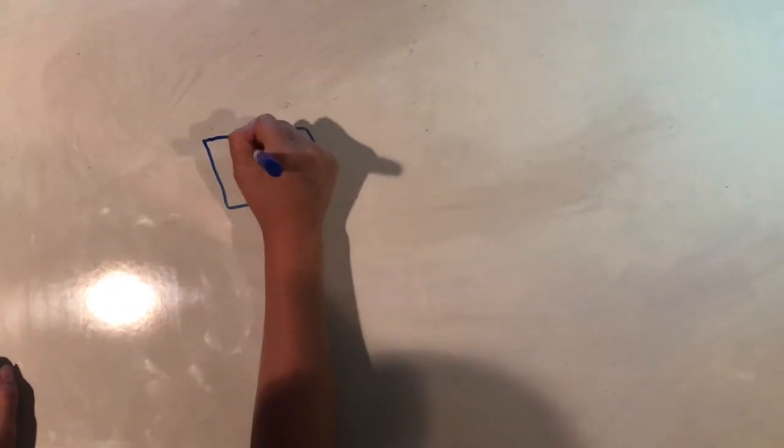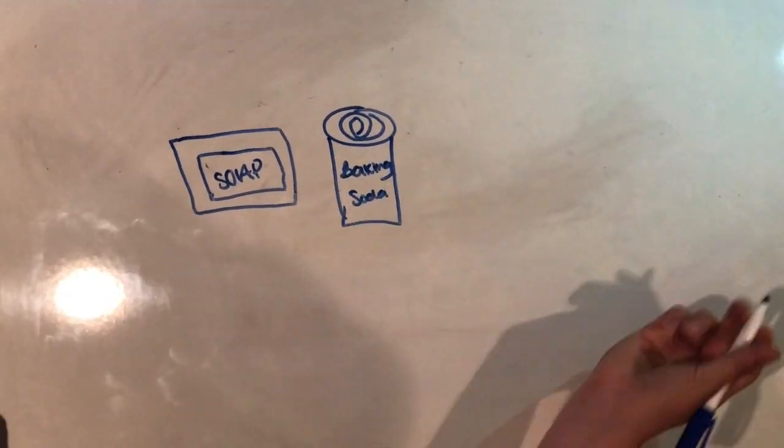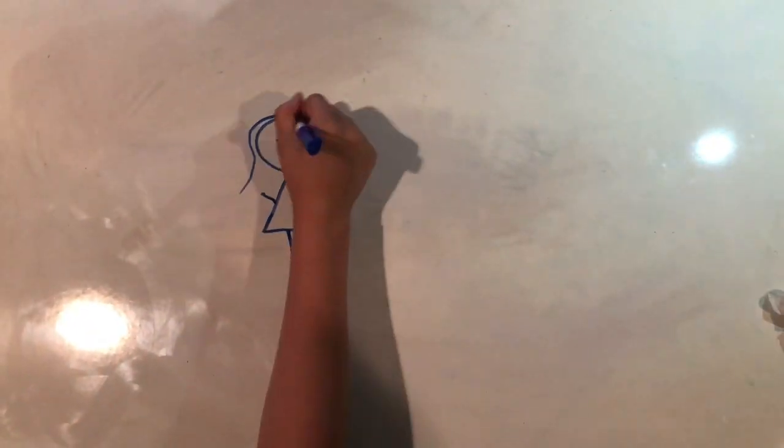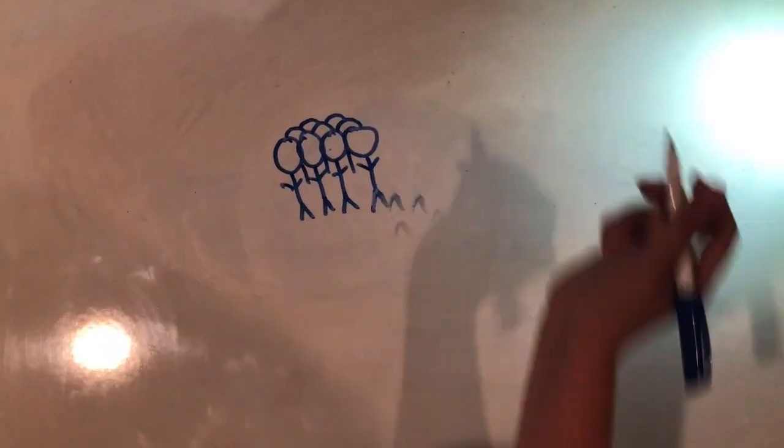Wrigley originally began selling soap and baking powder with a free stick of gum as incentive. Free gum became more popular than the merchandise itself. One of his first aims was to combat the lingering stereotype that only women should chew gum. Two of the company's earliest products, Sweet 16 Orange and Lotta gum, revolutionized chewing gum's appeal, spreading interest to the youth market and then to the public at large.